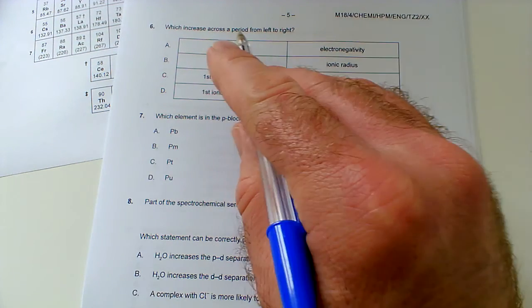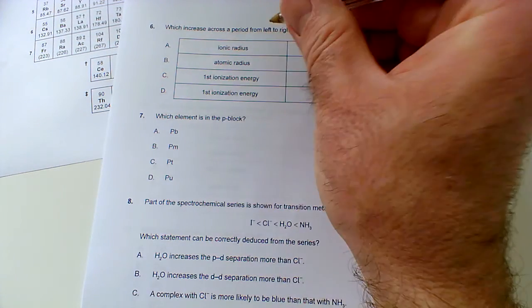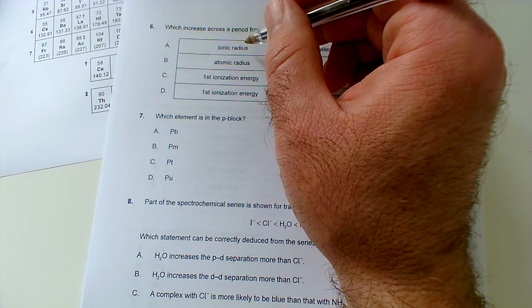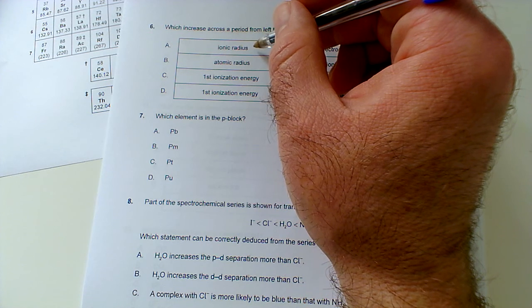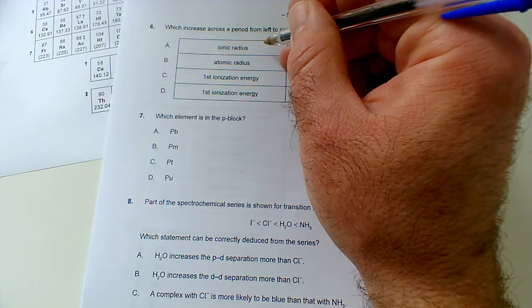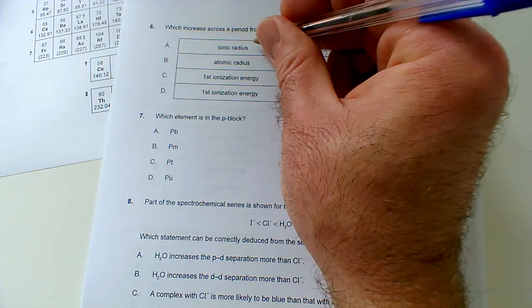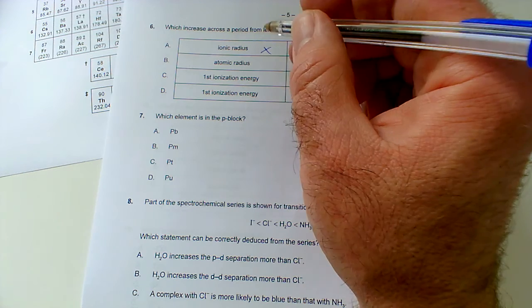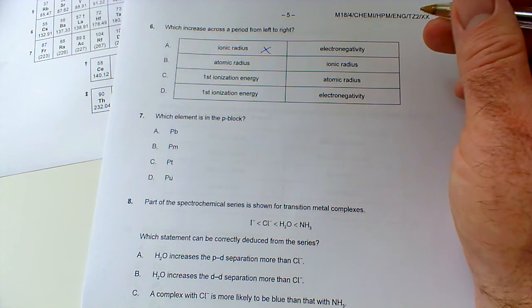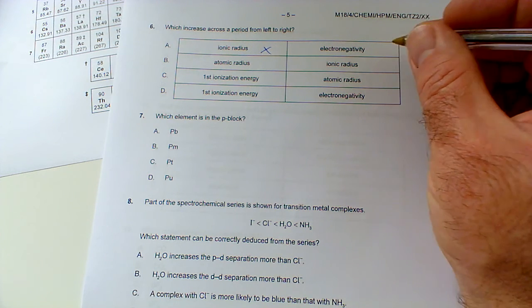Okay, which element across a period, which increases across a period from left to right? Ionic radius, electronegativity. Well that will decrease. Well it does a funny thing to be honest. It decreases because first of all you have your positive ions because metals will tend to lose electrons, and then it will jump up a bit and decrease again because then you get into negative non-metal ions which of course gain electrons. So that's incorrect because it does decrease and then it jumps up and decrease again.